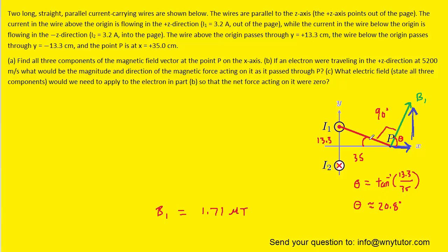That's this angle right here. We know this one is 90, and so we can easily find this angle now, because they all have to add up to 180 degrees. You should be able to figure out that this angle right here is 69.2 degrees, and with it we can now find the x and the y component.